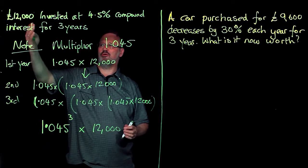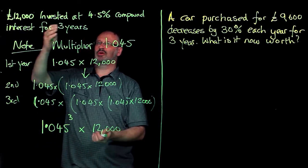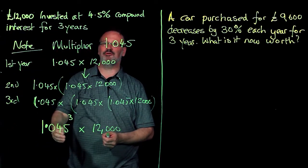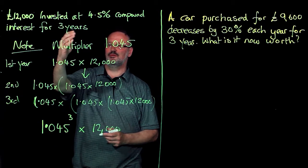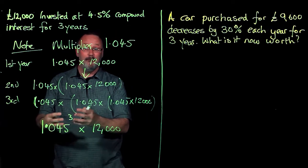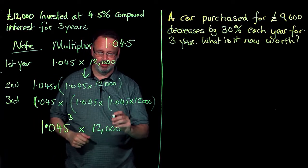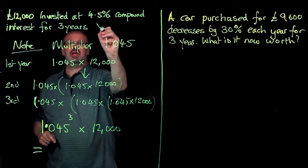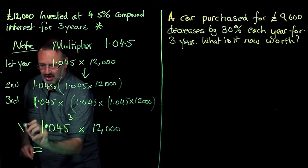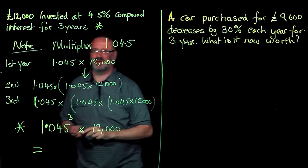And so I can go from my investment invested at 4.5%. The multiplier is 1.045 for three years. So I have 1.045 to the power of 3 times 12,000. That I would go from here to there in one step.